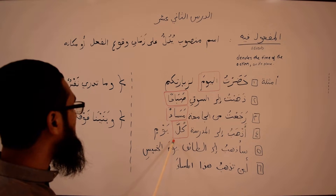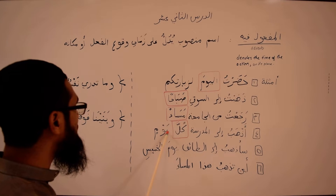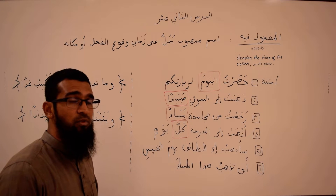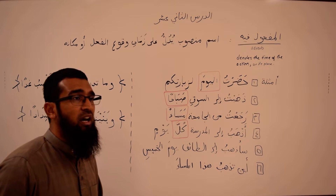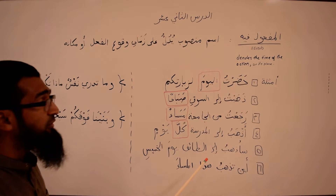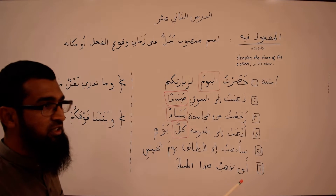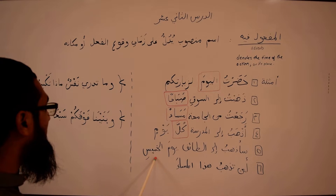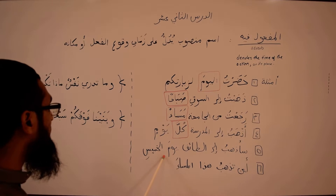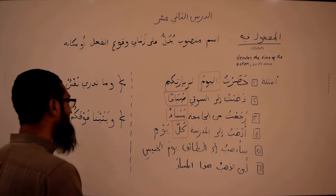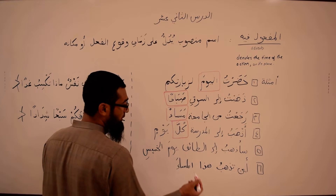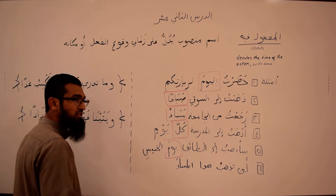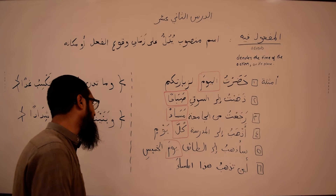The author — رَحِمَهُ اللهُ تَعَالَى, may Allah's mercy be upon him, and may Allah protect him — doesn't want to give all of the information about المفعول فيه here because it will be presented in greater detail later. Fifth example: سَأَذْهَبُ إِلَى الطَّائِفِ يَوْمَ الْخَمِيسِ — I will go to Taif on Thursday. The مفعول فيه is يَوْمَ, and يَوْمَ الْخَمِيسِ together means the day of Thursday.